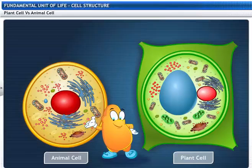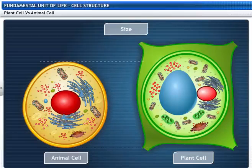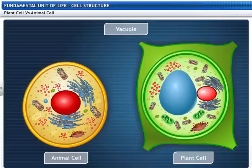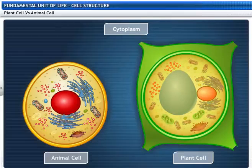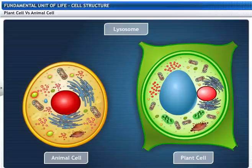Here is the animal cell and the plant cell — see if you can spot the differences. Plant cells are larger in size compared to animal cells. Plant cells have a cell wall, but animal cells do not. Plant cells have chloroplasts, but animal cells do not. Plant cells usually have a large vacuole, while animal cells have small vacuoles if present. The cytoplasm of plant cells is pushed to the periphery by the large vacuole, while in animal cells the cytoplasm is dense and fills the entire cell. Plant cells have fewer or no lysosomes compared to animal cells.